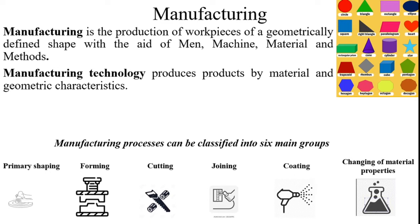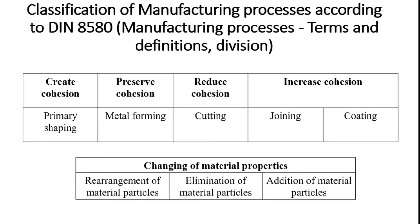These are the fundamental processes available with manufacturing for producing parts with desired shape. According to the classification of manufacturing processes per DIN 8580 — the German and international standard — the initial step is 'create cohesion,' under which primary shaping processes fall. The casting process is a primary shaping process under create cohesion. Then 'preserve cohesion' covers metal forming. After that, 'reduce cohesion' covers cutting processes such as machining and metal subtraction processes.